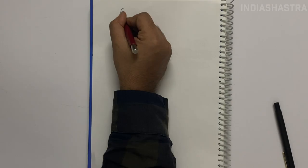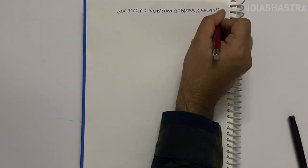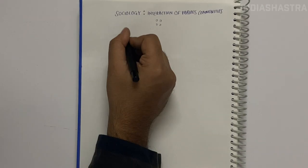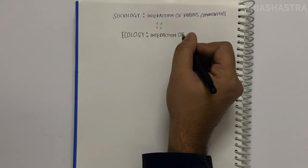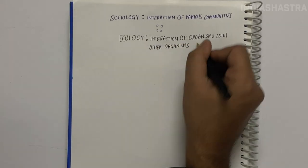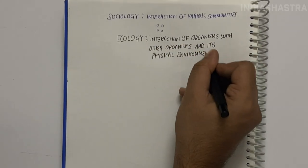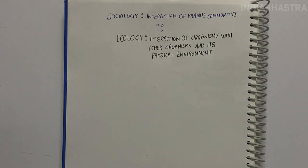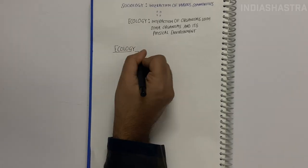Just as sociology teaches us about the interaction of various communities, ecology is a subject which studies the interaction among organisms and between the organism and its physical environment — that is, the abiotic environment.